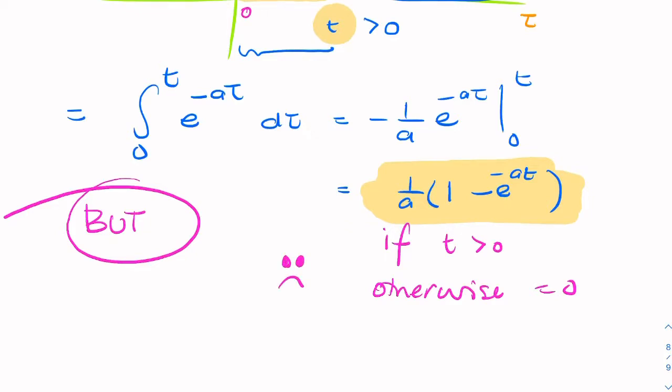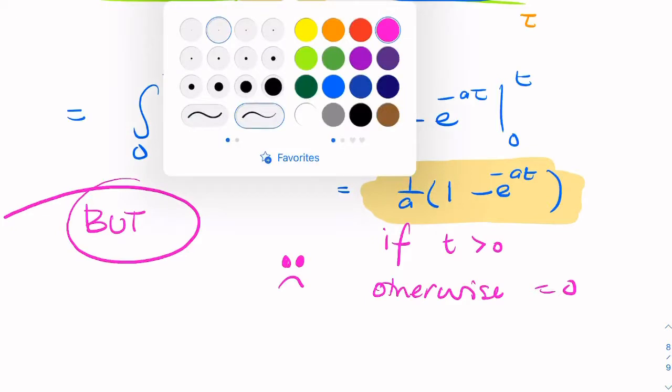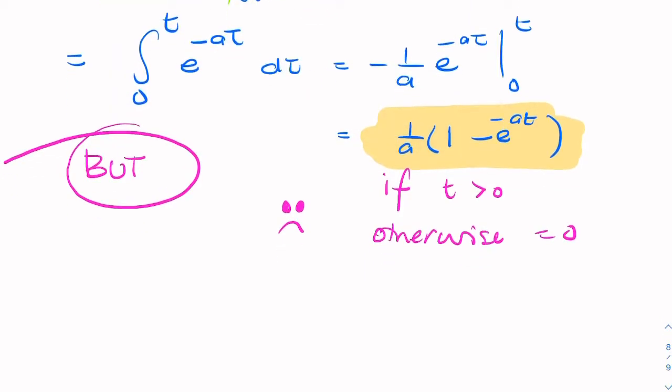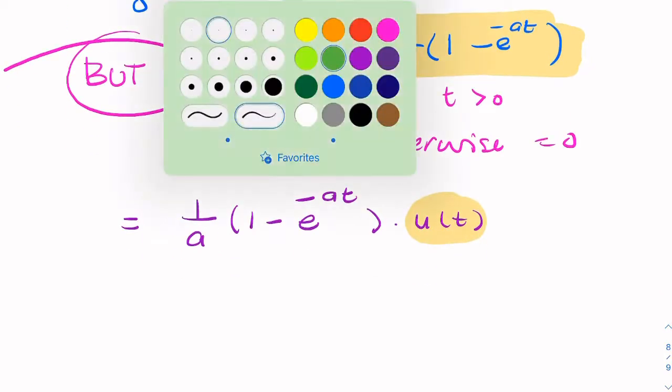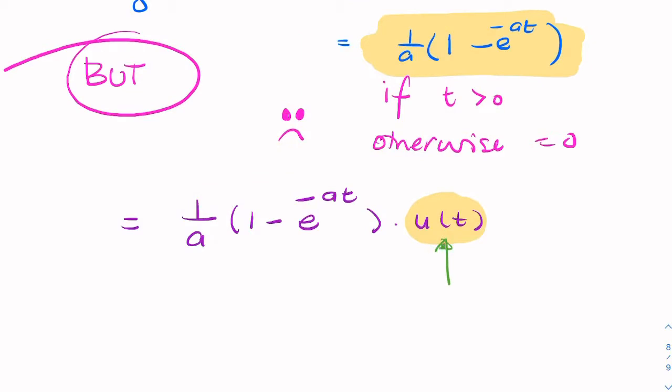Not a very elegant way of expressing it. So a more elegant solution would be to say it's one over a times one minus e to the power minus at times u of t. Why am I multiplying by u of t? Because u of t, by definition, is equal to one if t is greater than or equal to zero, or zero if t is less than zero.